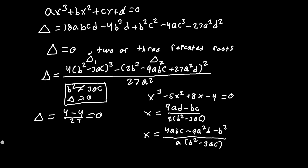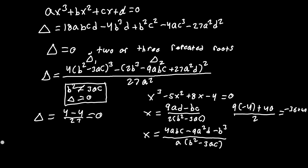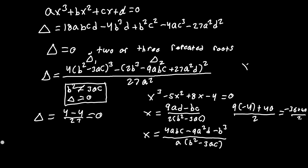Let's compute the repeated root: with a=1, b=-5, c=8, d=-4 and Δ₁=1, we get (9(-4) - (-5)(8)) / (2·1) = (-36 + 40) / 2 = 4/2 = 2. So the repeated root is x = 2.